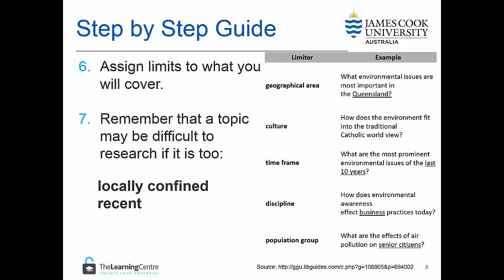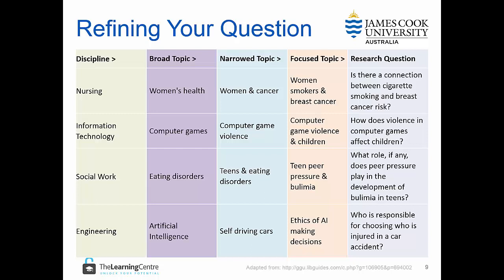It might be difficult as well if the research is too recent, or broadly interdisciplinary. Start with your discipline. In the first example, we can see the discipline is nursing. We have settled on a broad topic of women's health, narrowed it down to women and cancer, and then focused the topic to women smokers and breast cancer. The research question developed is: Is there a connection between cigarette smoking and breast cancer risk? We will apply our four evaluation questions to this research question, and if we're happy with it, we will move forward.